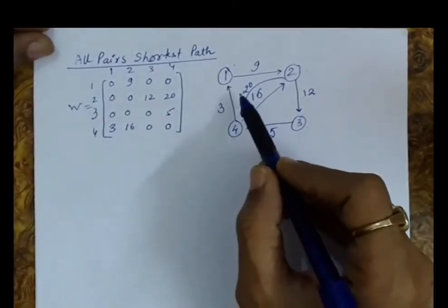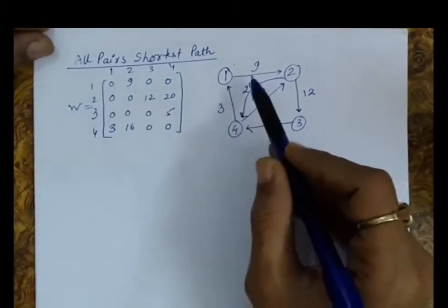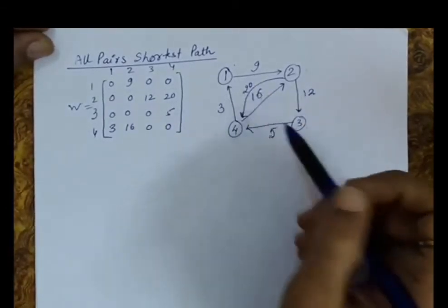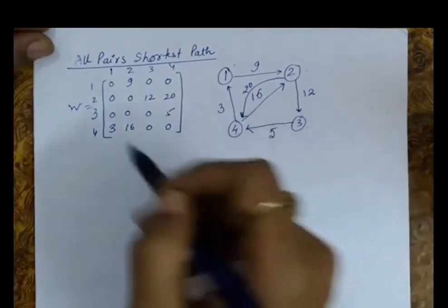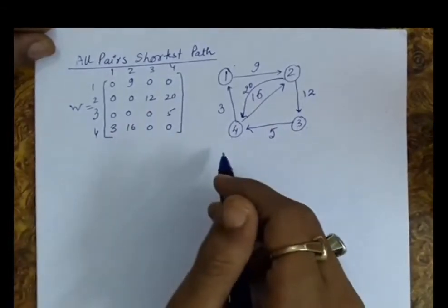Let us count the number of edges here: 1, 2, 3, 4, 5 and 6. So we have 6 edges and have made all the entries in this weight matrix.